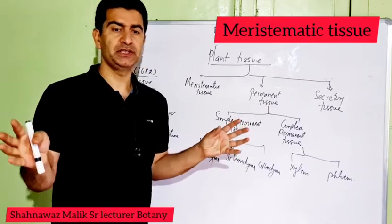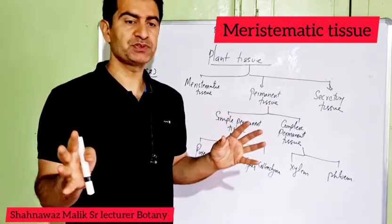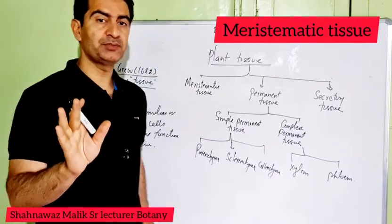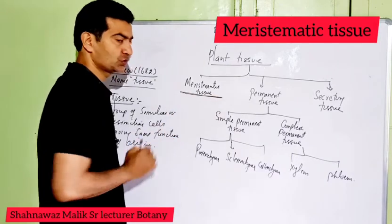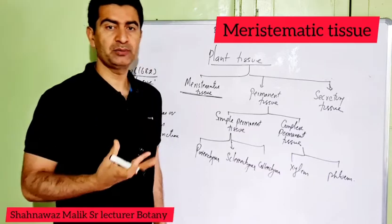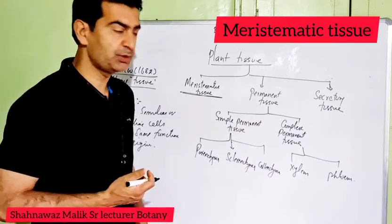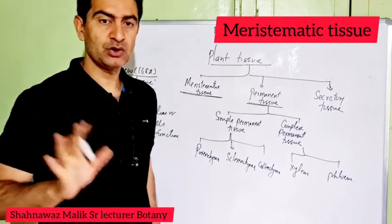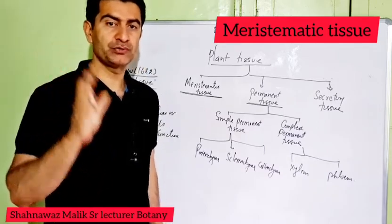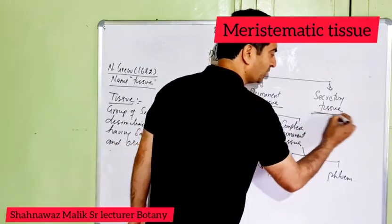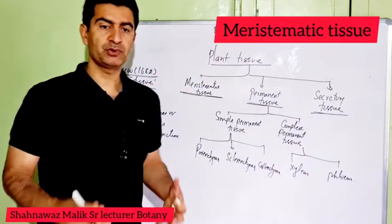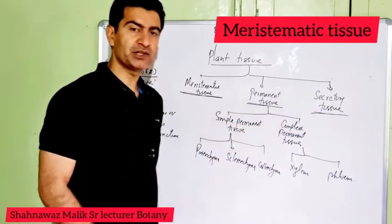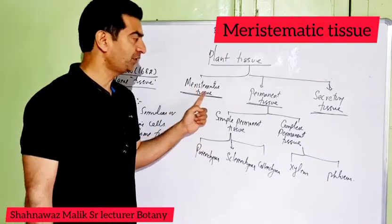When we categorize plant tissues, there are three types: first is meristematic tissue — cells which have the inherent power to divide. Second is permanent tissue — cells that are mature, have lost the power of division, and have undergone differentiation. Third is secretory tissue — tissue that performs the function of secretion, secreting different types of materials or secondary metabolites.